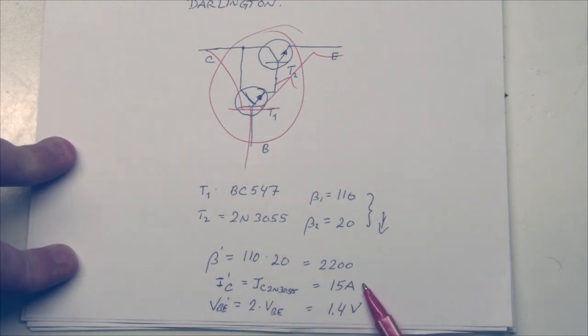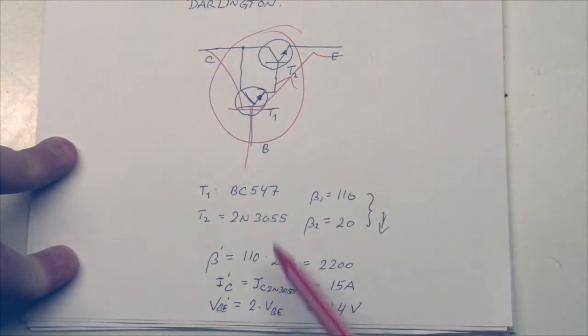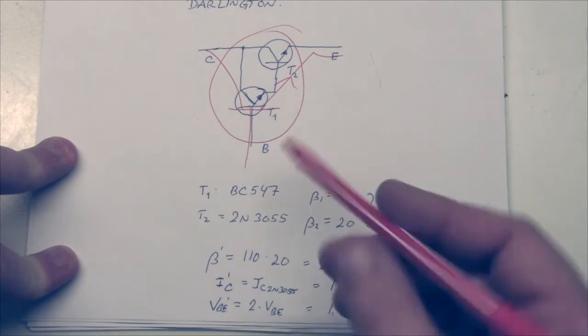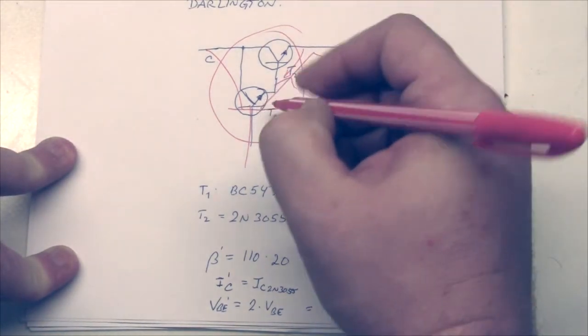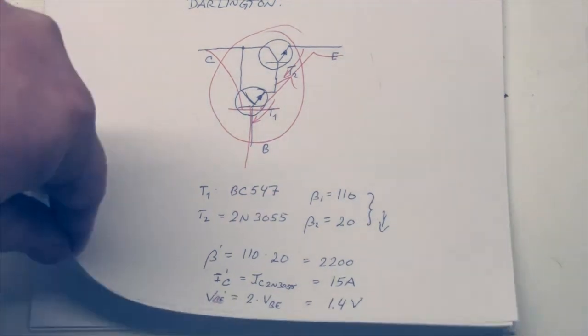If we take this as one big transistor, basically what we get is a beta which is this one times that one, which is 2200. We have a maximum current which is 15 A. And the only thing that is different really is that the VBE of the big transistor is two times the VBE of a single transistor, meaning the VBE across the big one plus the VBE of the little one. So we have a VBE common of 1.4. This is very straightforward.